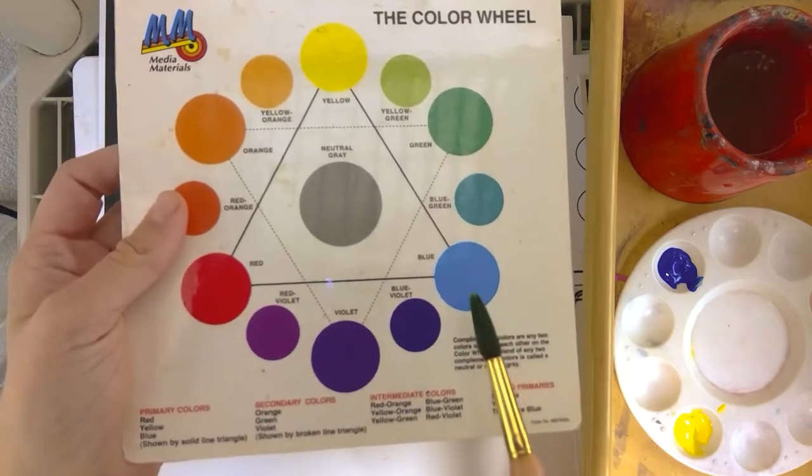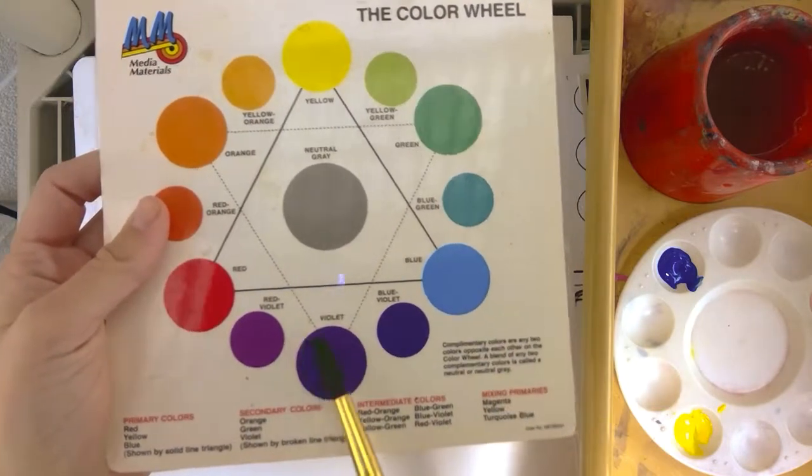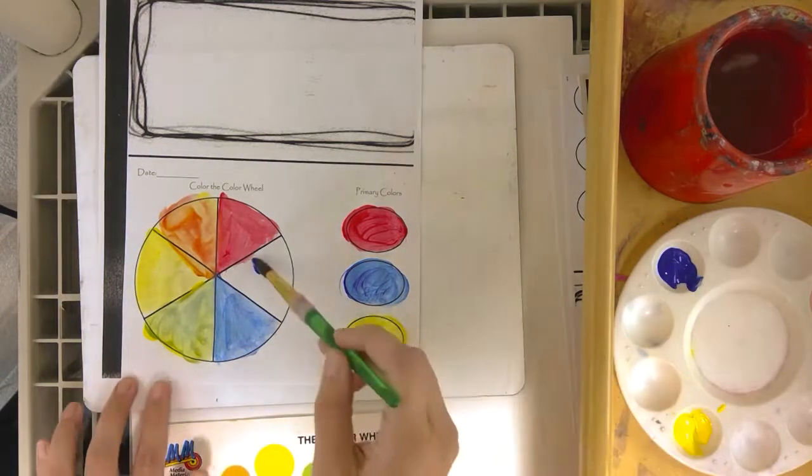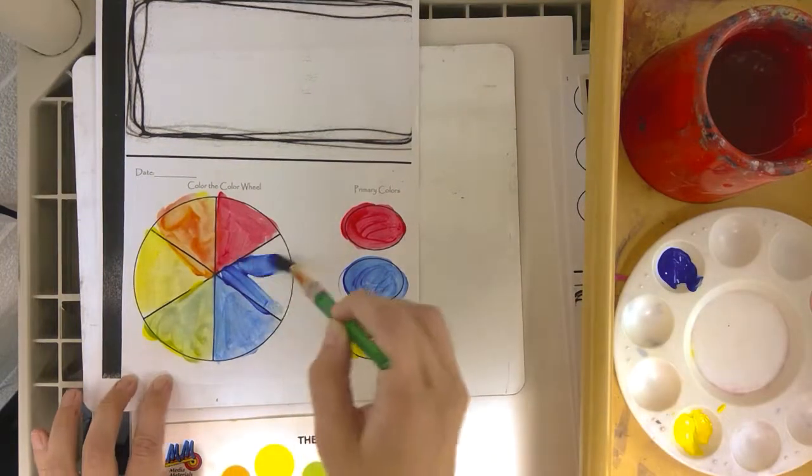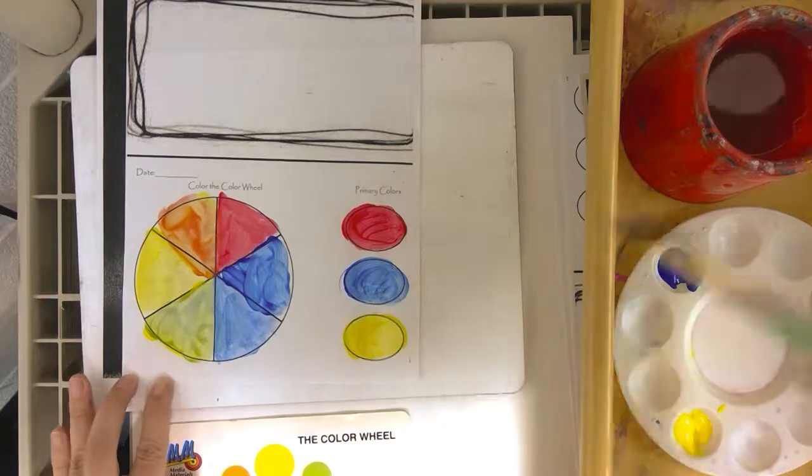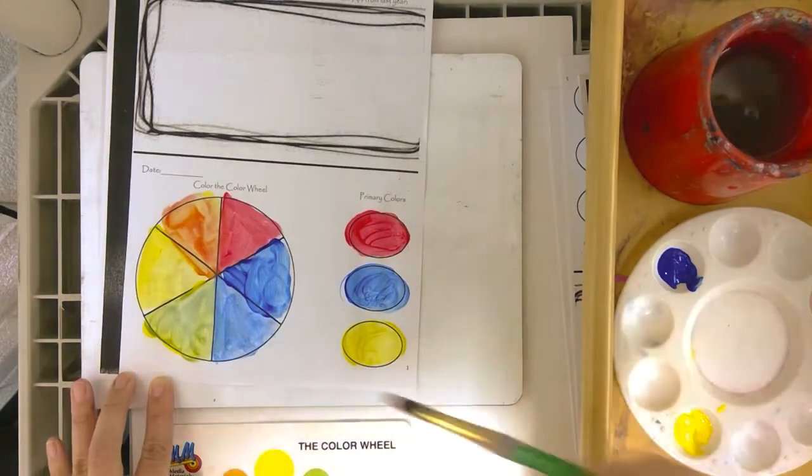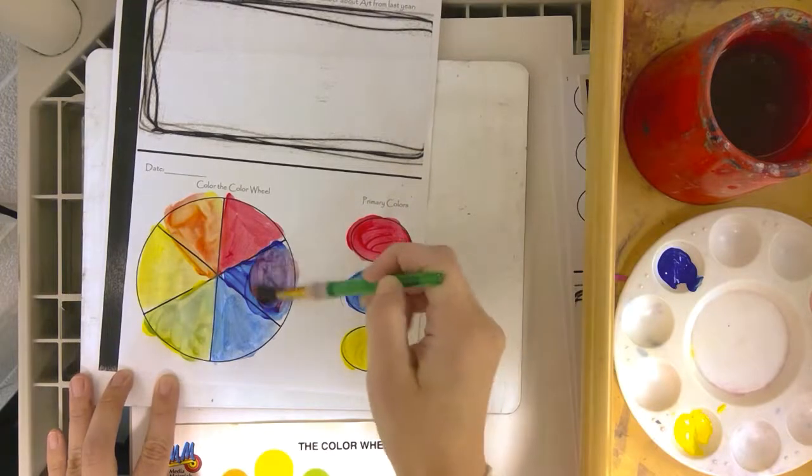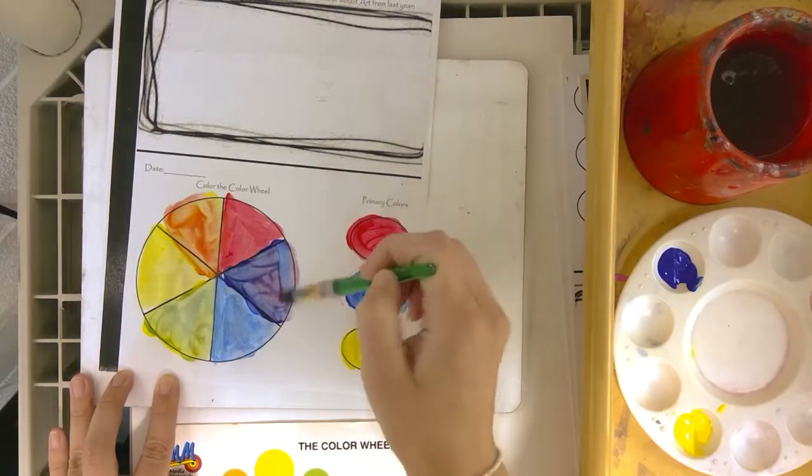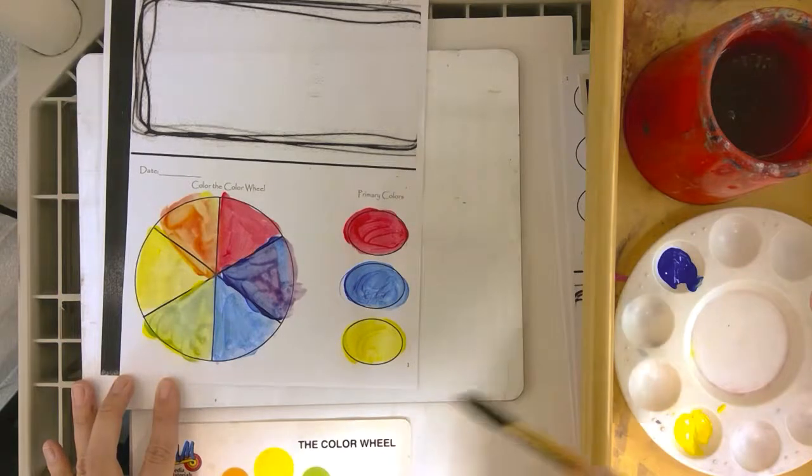Red and blue are on either side, so that makes violet. So I'm going to take my blue, put on my last piece of pie. I'm going to rinse my brush off. I'm going to take my red, mix it together to make my violet. And there you go. Your color wheel.